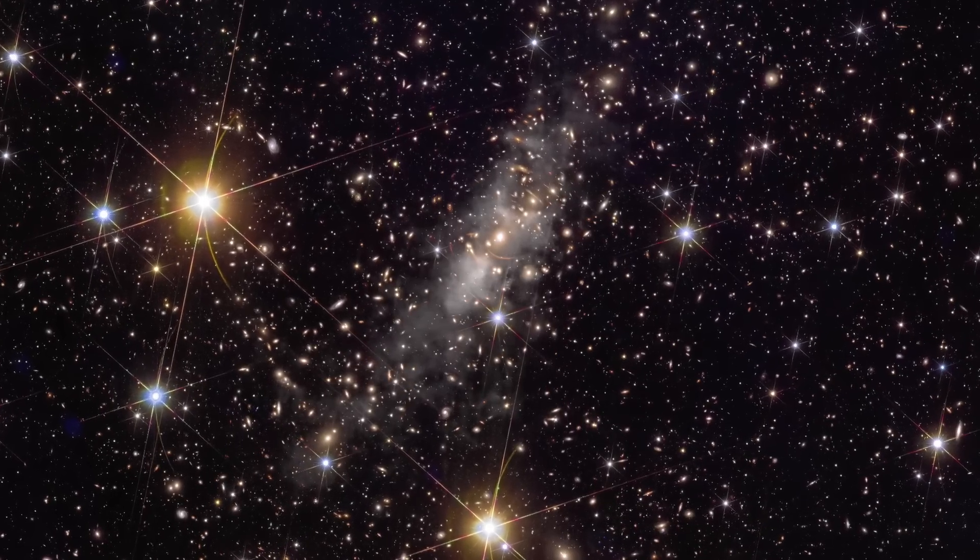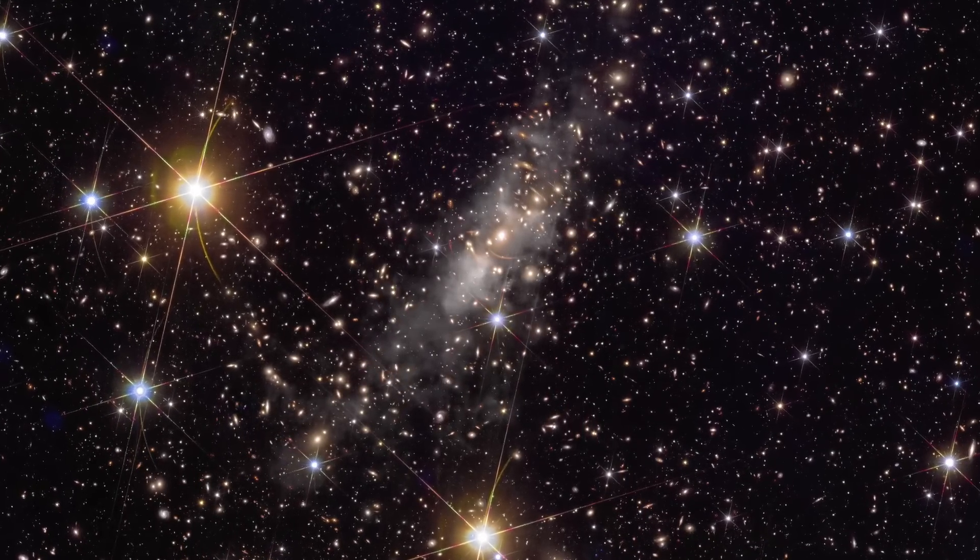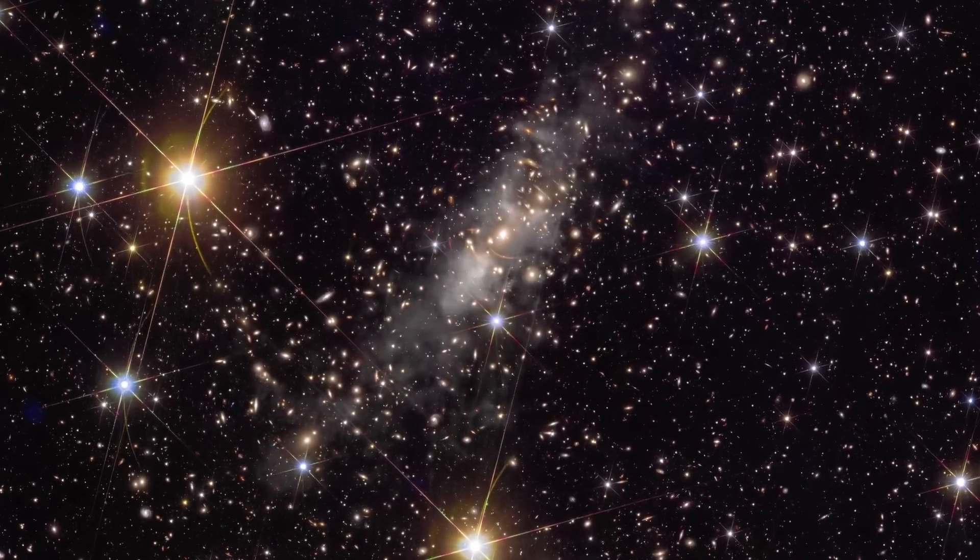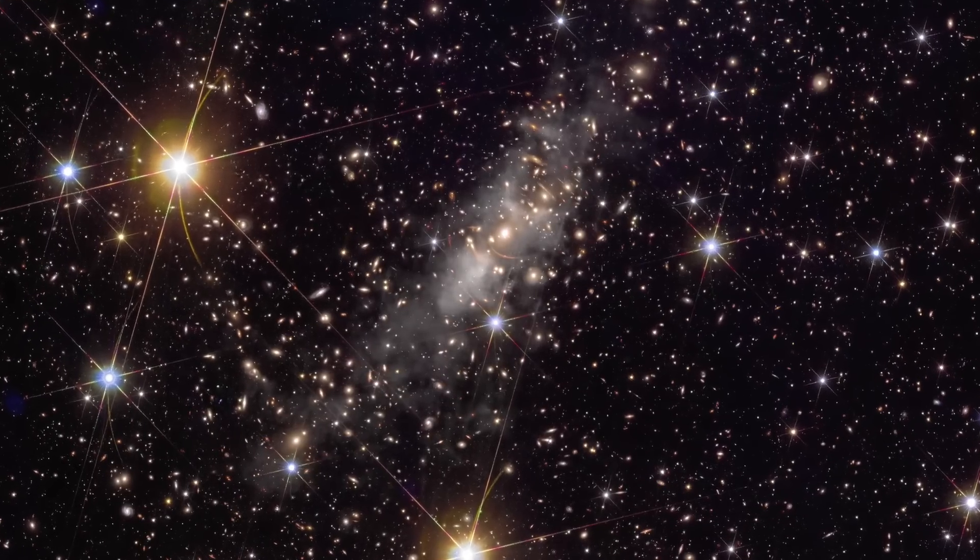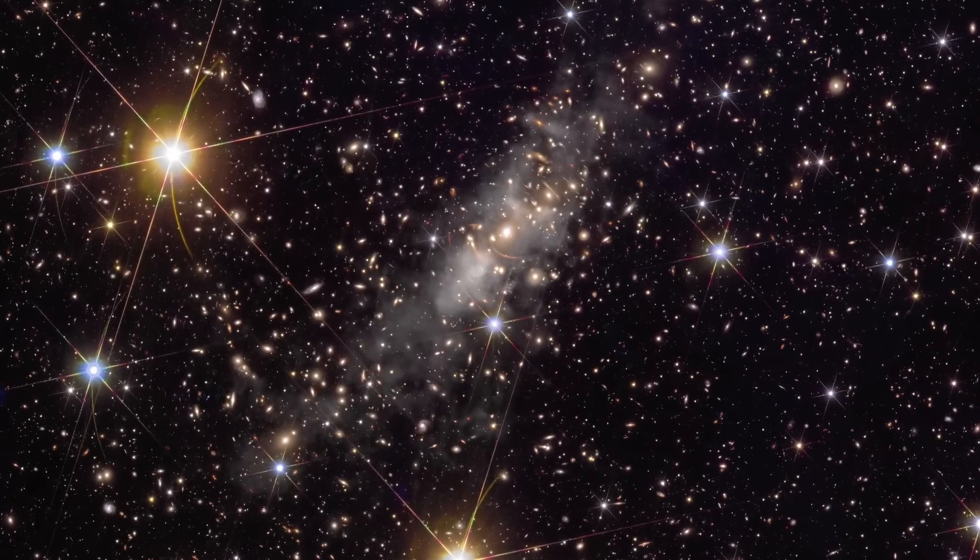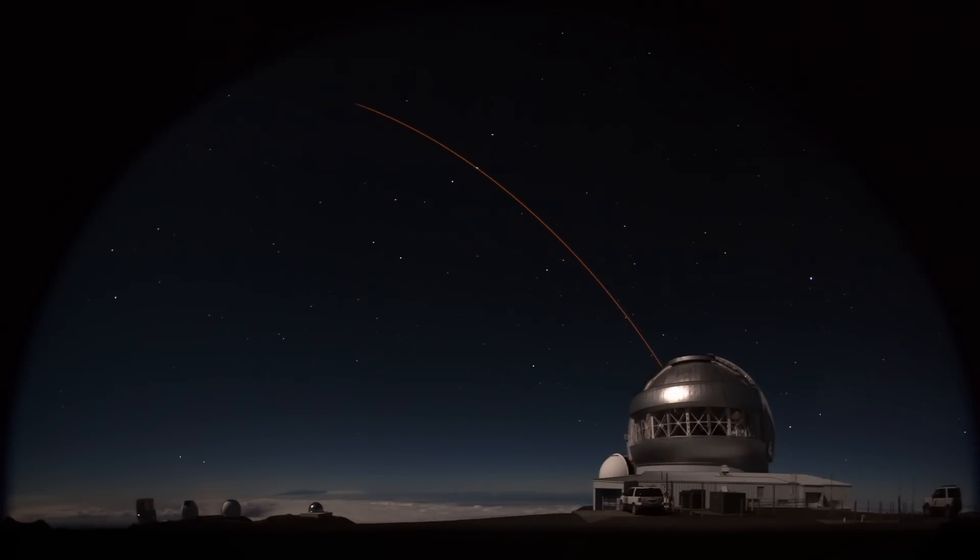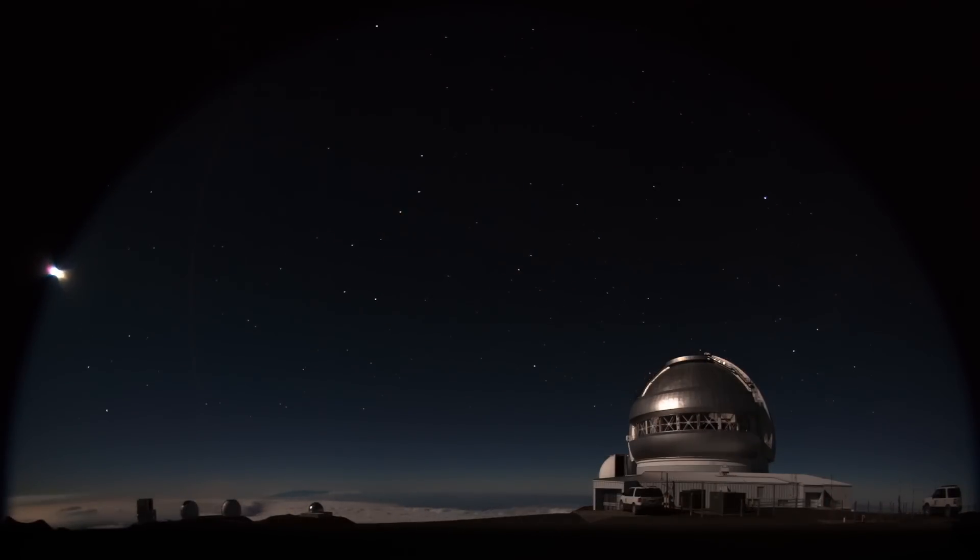Euclid's cutout view of Abel 2390 also shows the faint intracluster light emitted by stars that don't belong to a parent galaxy. They just exist in intergalactic space. Some studies have found a good correlation between the spatial distribution of intracluster light and the dark matter distribution in clusters. So, potentially, it could be used as a tracer for dark matter. But this emission is extremely faint from the ground, so that's something Euclid will be amazing for.